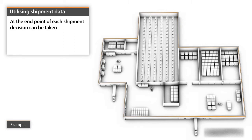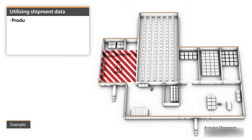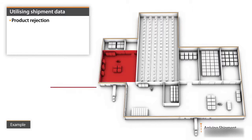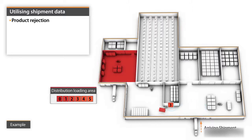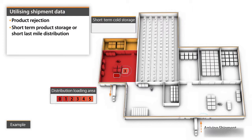At the endpoint of each shipment, a decision can be taken in respect to the pallet's destination. CCL scores support decisions regarding product rejection, short-term product storage, or short last-mile distribution.